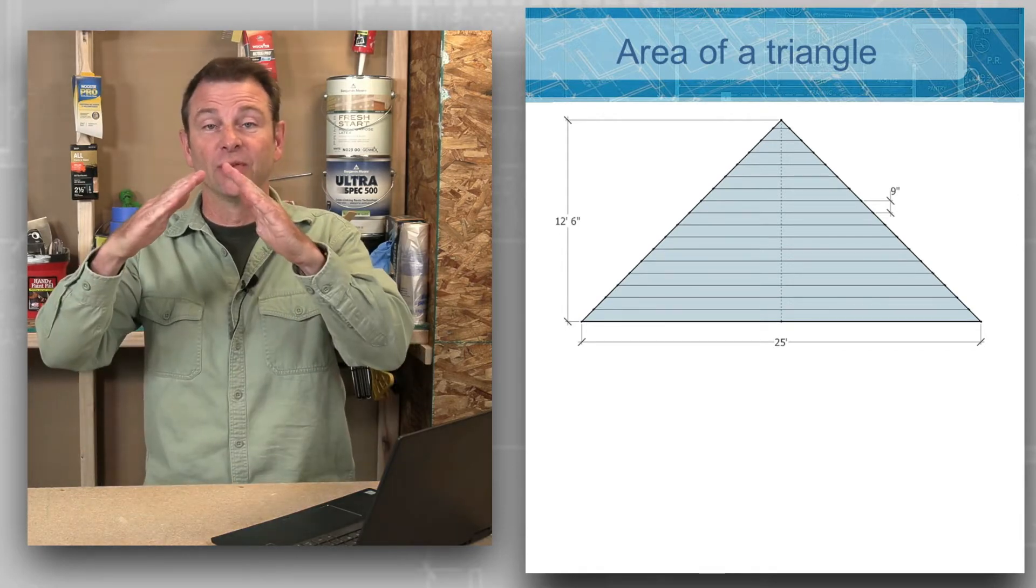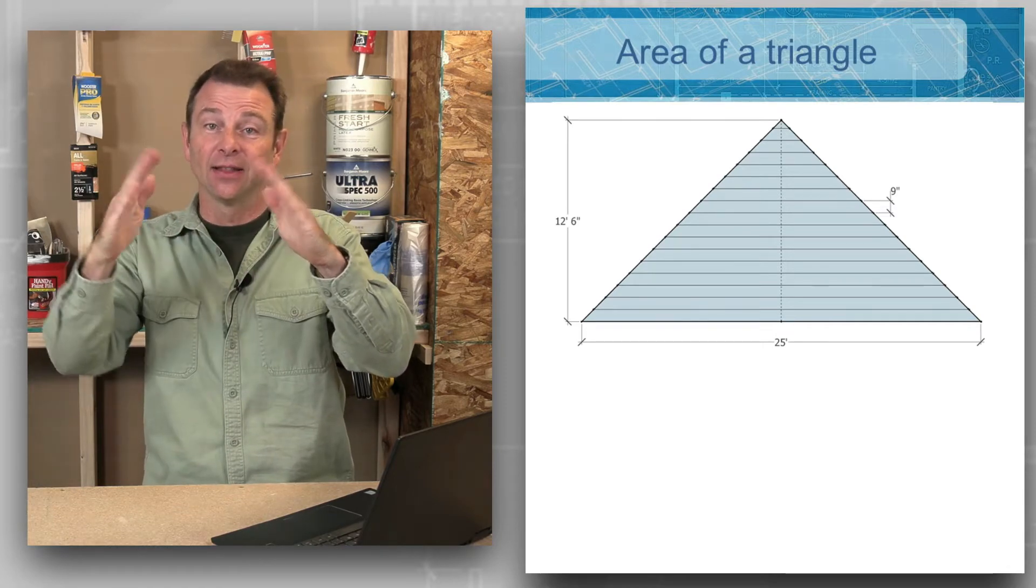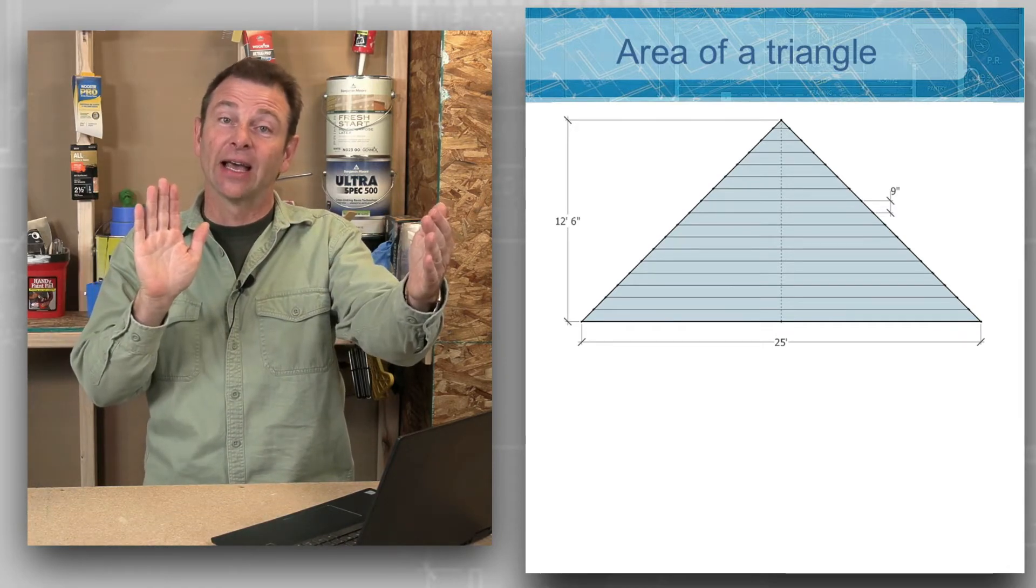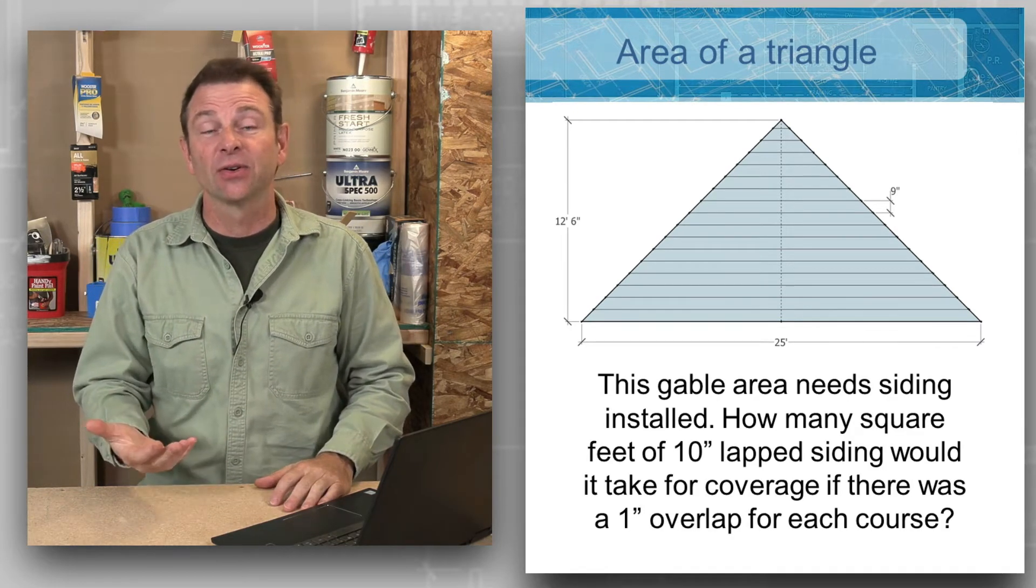What you have here is the area that falls inside on the front and the back of that is called a gable. So we're going to side this. We need a finished material on the outside; we're going to call it siding.